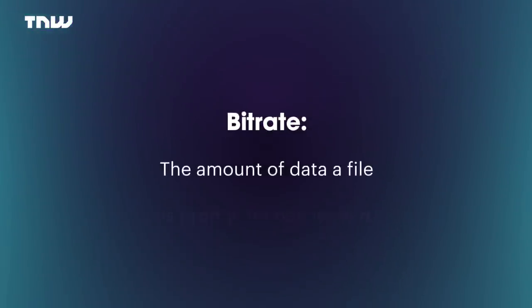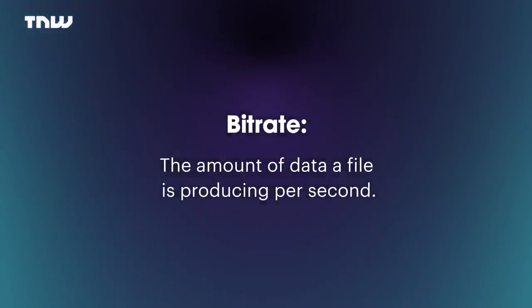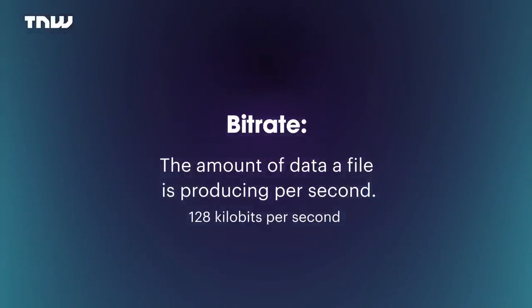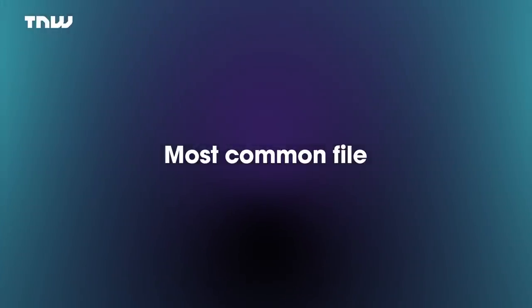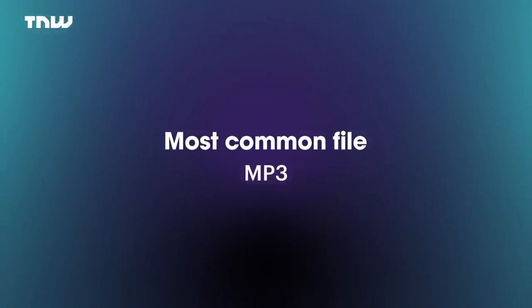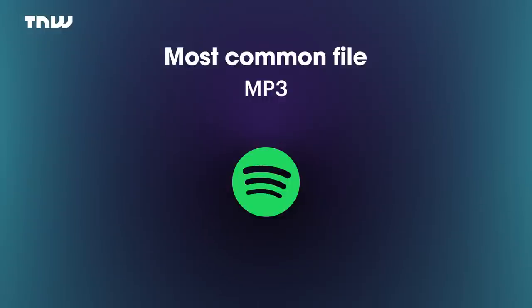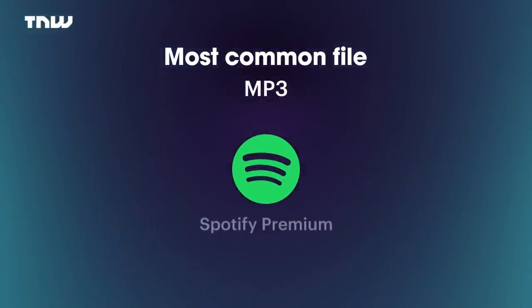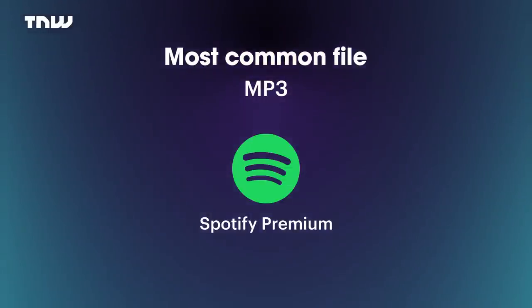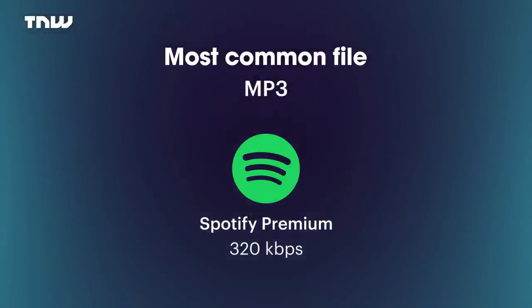Bitrate is an expression of the amount of data a file is producing per second. For example, 128 kilobits per second is a pretty common file size for music. The most common file presented this way is an MP3, and this is what streaming services like Spotify use. On Spotify Premium, the highest quality you can get on an MP3 is 320 kilobits per second.